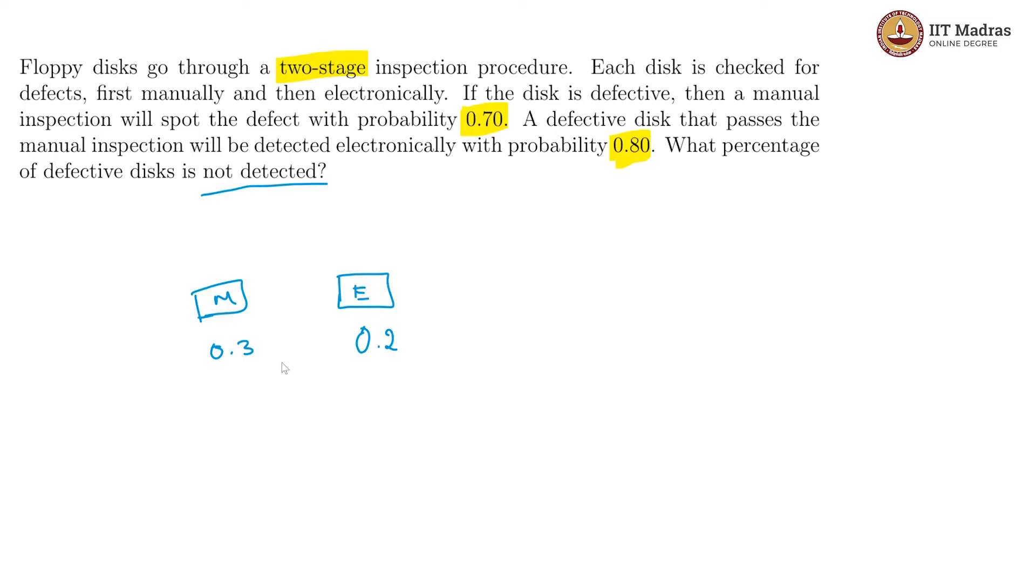So now when we look at the combined probability, we have 0.3 into 0.2 which is 0.06. So this 0.3 is 1 minus 0.7 because 0.7 is the probability of detection and the probability of not being detected is 0.3. Likewise, this is 1 minus 0.8.